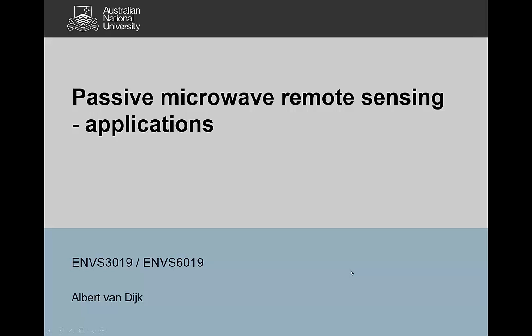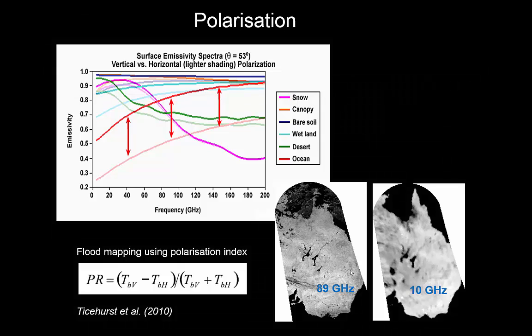Hi, this is Albert van Dyck and in this second video on passive microwave remote sensing I want to have a quick look at some of the applications of passive microwave remote sensing and how we actually measure it using satellites. In the previous video we talked about brightness temperature, emissivity and polarization, and here I want to show one way that we can use those different features for mapping the properties of the surface.